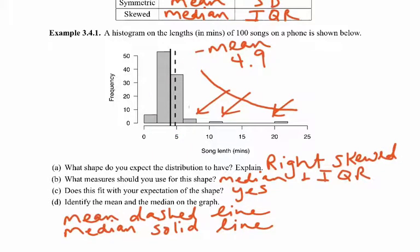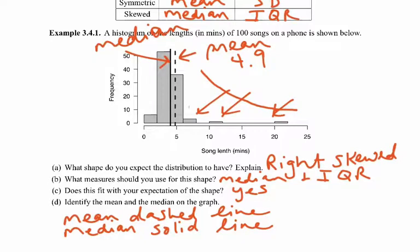The median is the solid line. From the data, the median is about 4 minutes. The median better represents the data because this is a skewed distribution.